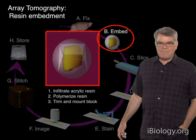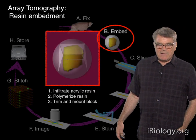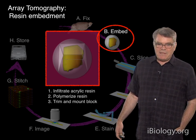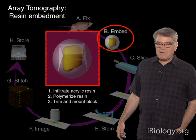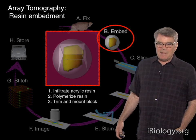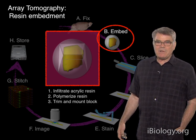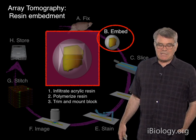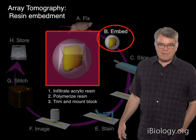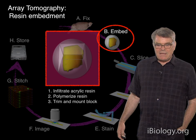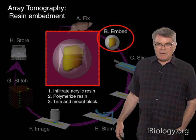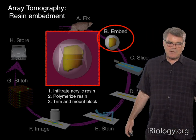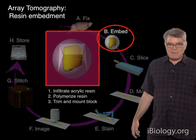Next we come to the embedment step. One of the special tricks in array tomography is to use one particular class of resin for embedding — an acrylic resin. Acrylic resins are better for post-embedding immunostaining, which is the lifeblood of fluorescence array tomography. There are a number of acrylic resins that can be used. The point is this is not the epoxy resin that is used traditionally for electron microscopy.